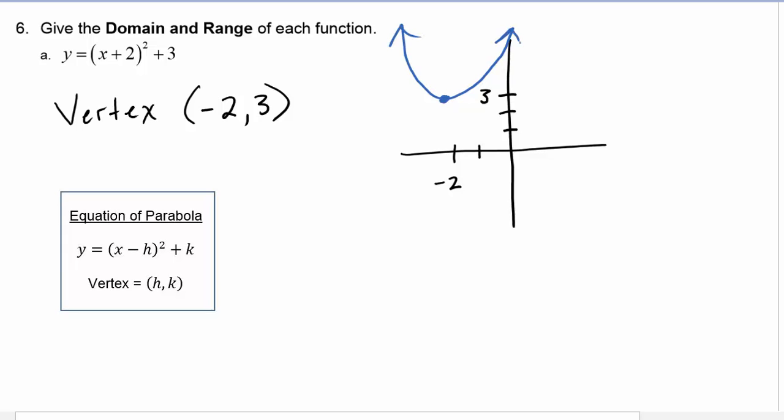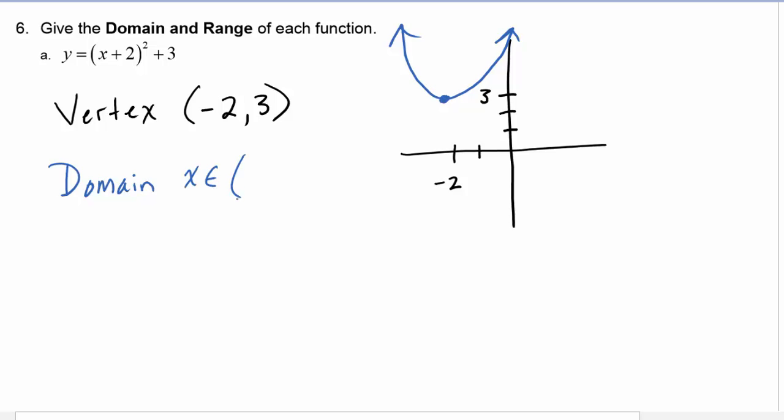Now the domain and range is very easy to get. Domain comes from all the x values we are allowed to plug in, and we see that the x values go negative infinity in the negative direction, positive infinity in the positive direction, so our domain is negative infinity to positive infinity.